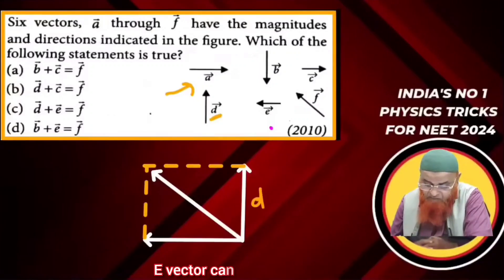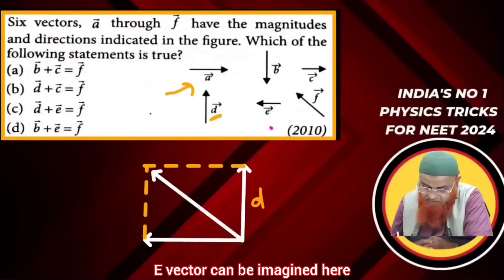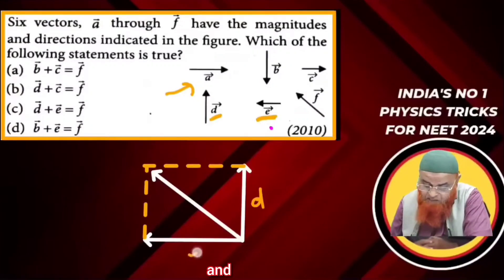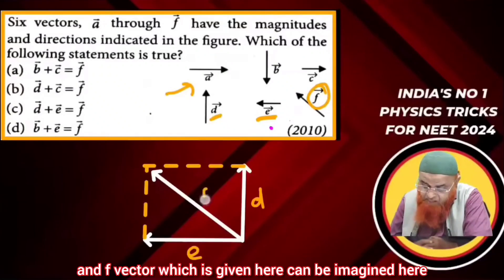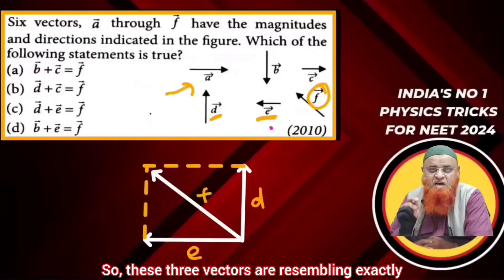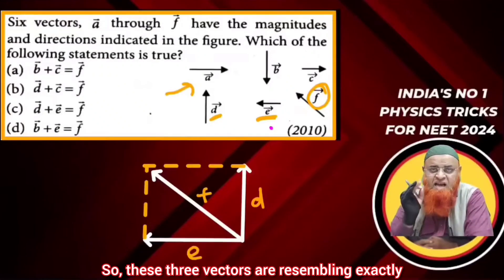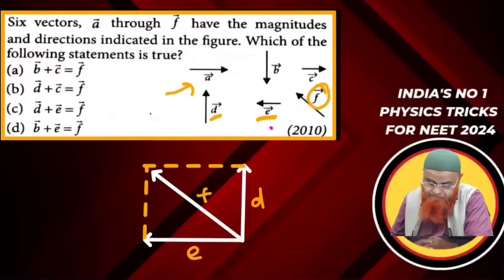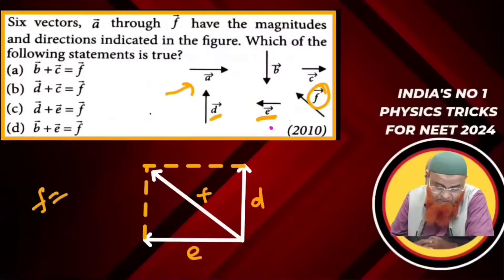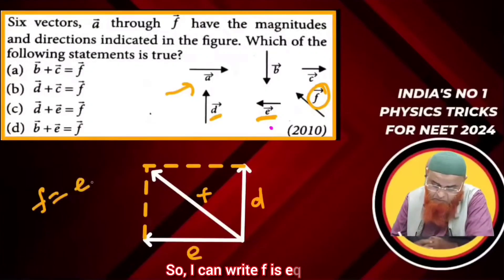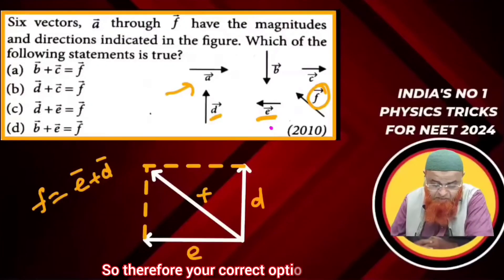In this, if you observe, e vector can be imagined here, and f vector which is given here can be imagined here. So these three vectors are resembling exactly like a parallelogram, and f is taken as a resultant. So I can write f = e + b. Therefore, your correct option is going to be option T.